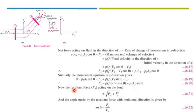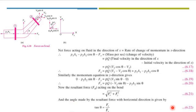In order to compute the resultant force acting on the bend, we use Fr = √(Fx² + Fy²). The angle made by the resultant force with the horizontal direction is calculated using the formula tanθ = Fy/Fx.